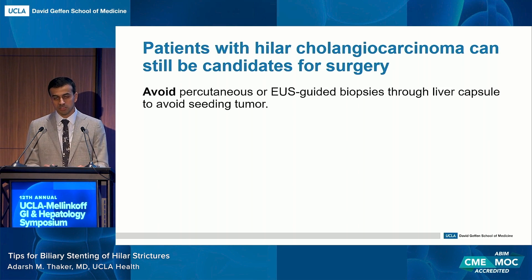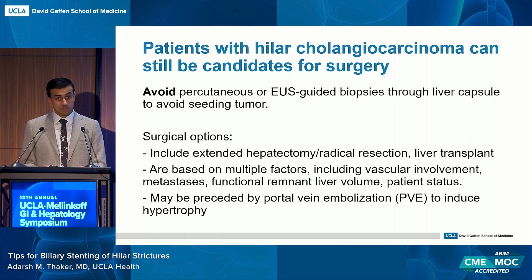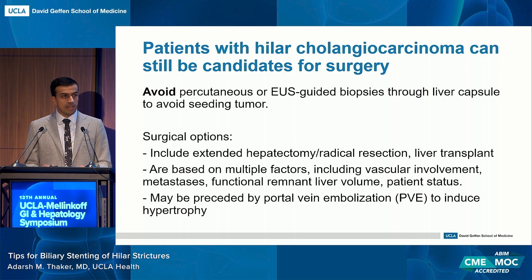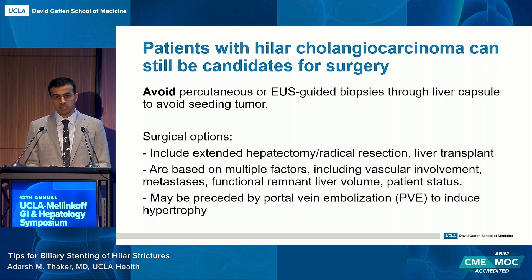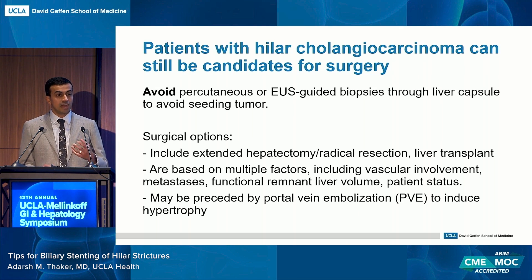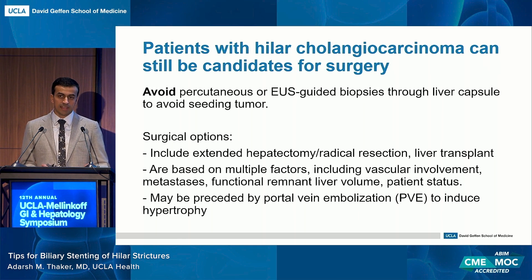Make sure it's metastatic or you've had a multidisciplinary discussion with hepatobiliary surgery, surgical oncology, or other colleagues. Surgical options include aggressive surgeries like extended hepatectomy or radical resection. At centers like UCLA, they will actually consider liver transplant. They'll look at vascular involvement, healthy segments, and could do portal vein embolization to induce hypertrophy of healthy areas of the liver before removing areas where tumor is involved. Don't assume it's non-surgical based on initial impressions.